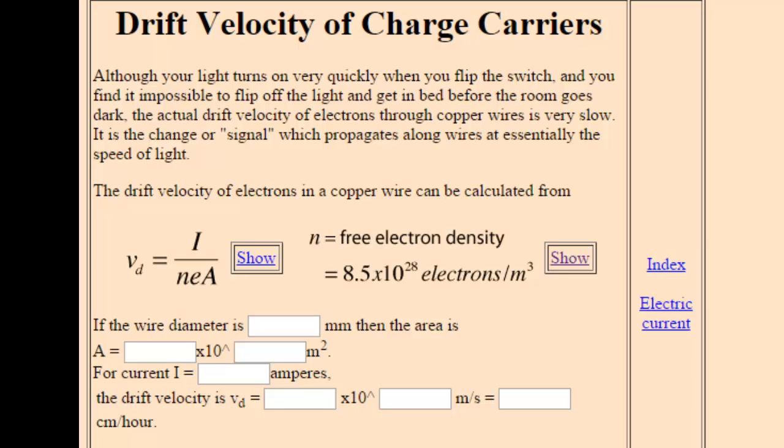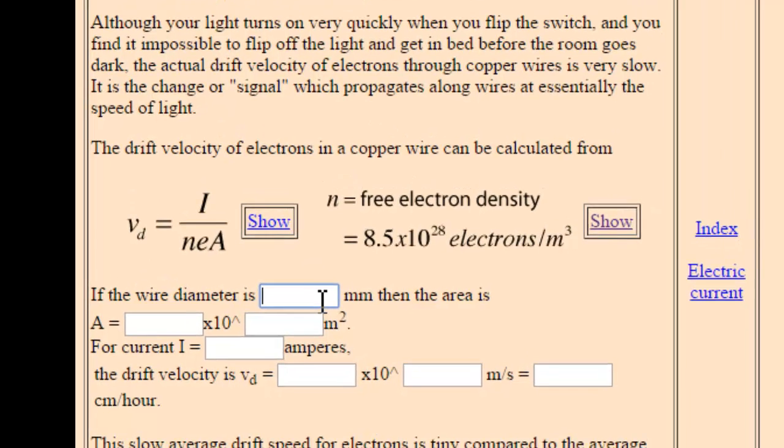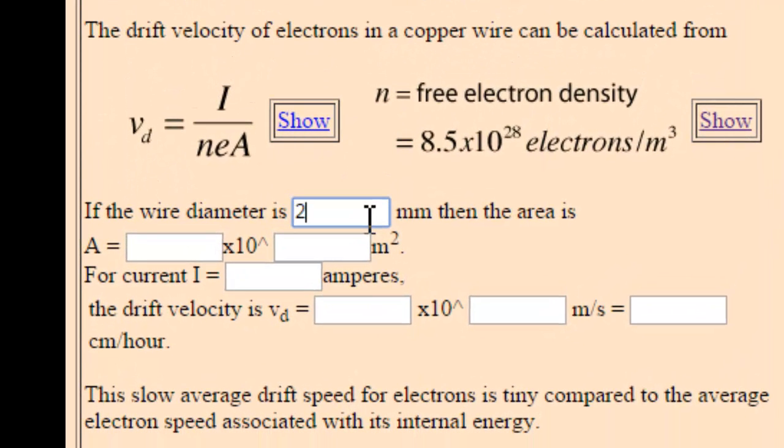So here we have it, the drift velocity of charge carriers. It's rearranged for you already. It tells you that the free electron density, in other words the number of particles per unit volume, is 8.5 times 10 to the 28 electrons per meter cubed. Now let's make up a diameter, let's say the diameter is 2 millimeters.